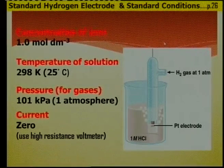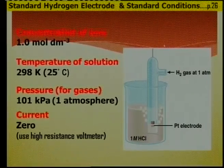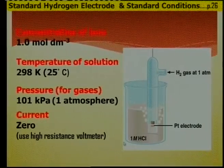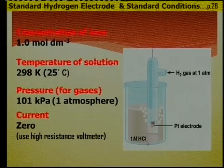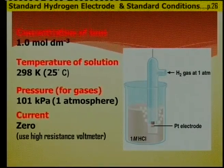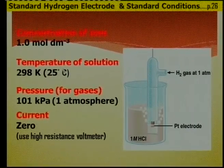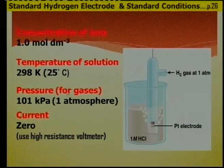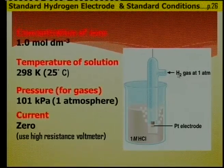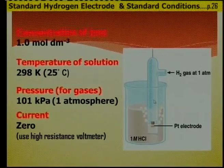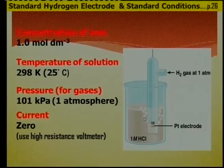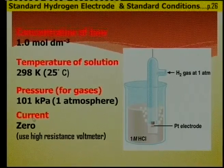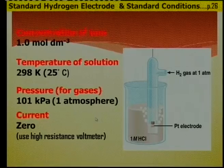Here is our standard electrode potential — the standard hydrogen electrode — against which we compare and find all those values on Table 4b. When we work in laboratories we must have standard conditions, found on page 26: concentration of one mole per decimetre cube, temperature of 25°C, and pressure of one atmosphere or 101 kPa if gases are involved. We use a high-resistance voltmeter so there is no current flowing.